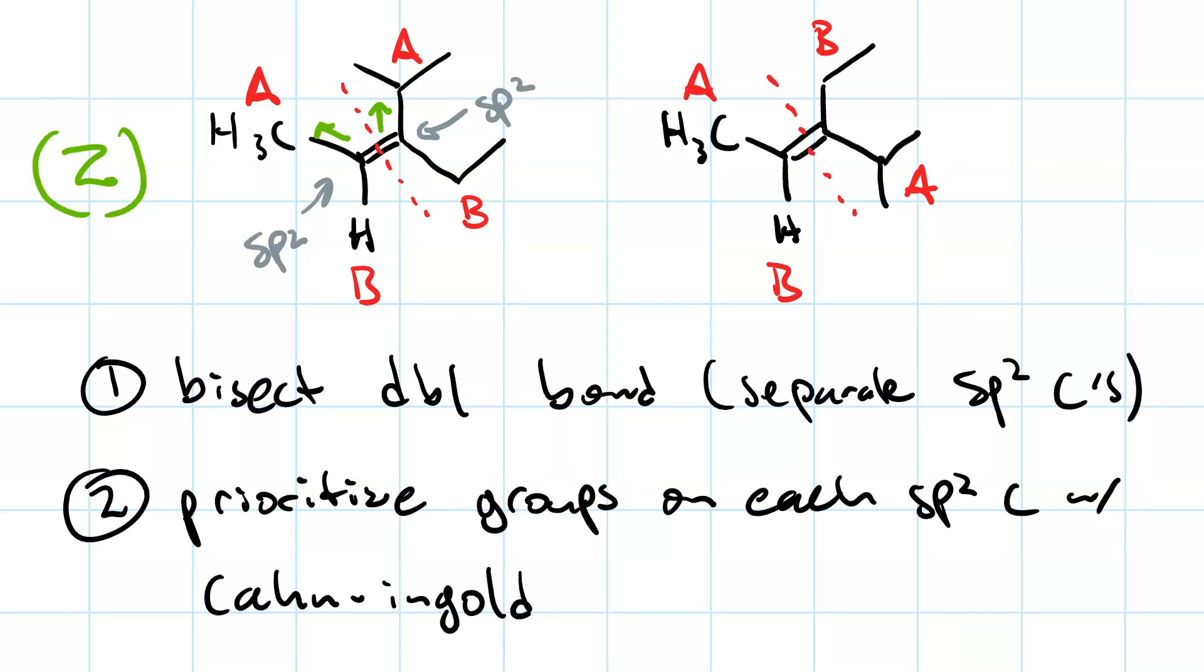For the molecule on the right, they're pointing in opposite directions. One's pointing up, the methyl group's pointing up, and the isopropyl group is pointing down. So this one is entgegen, which is German for separate.